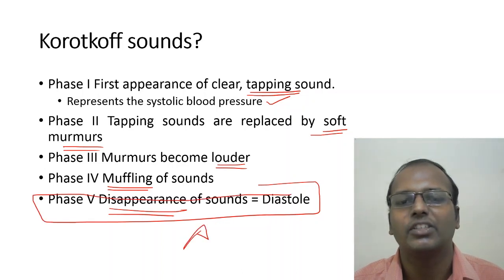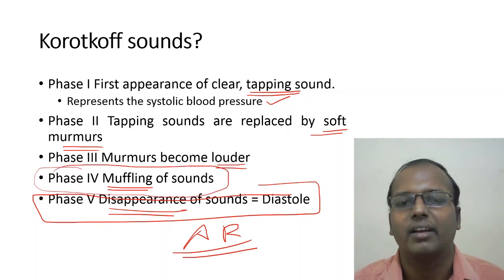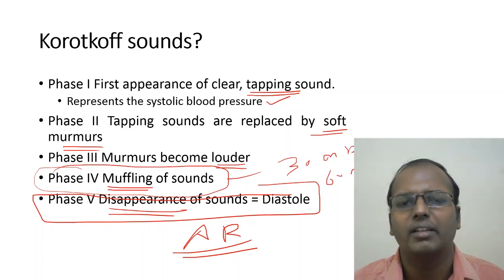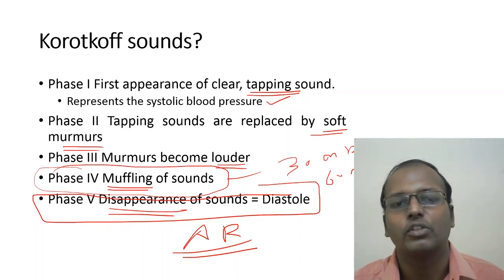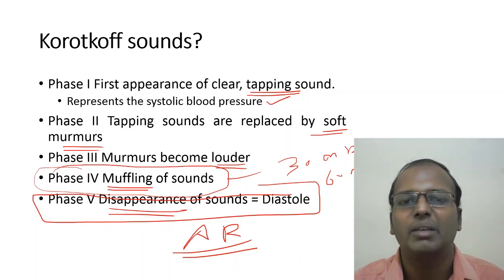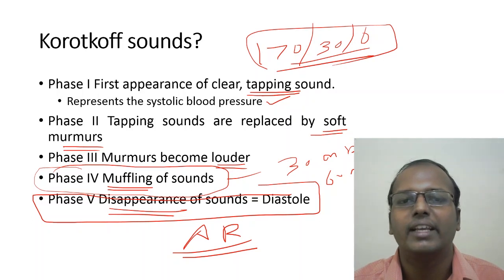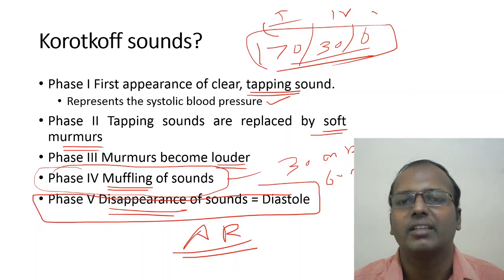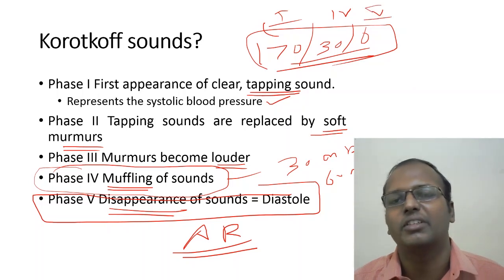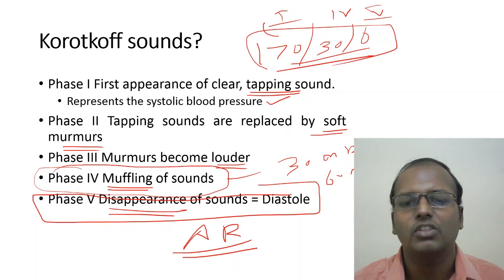In severe aortic regurgitation, Phase 4 sounds may persist at very low pressures (e.g., 30-60 mmHg) and Phase 5 may never occur. In this case, record BP as systolic/Phase 4 reading/zero — for example, 170/30/0 — indicating disappearance of sound does not happen. In normal cases, use Phase 1 and Phase 5.